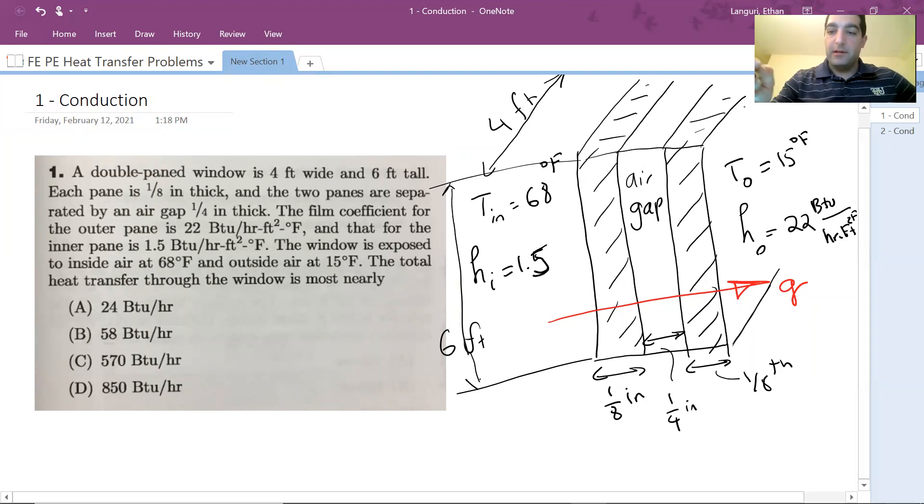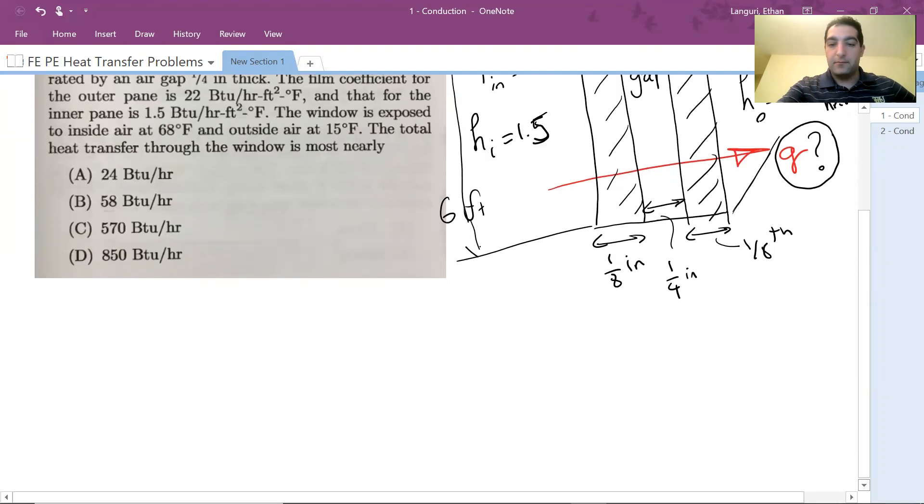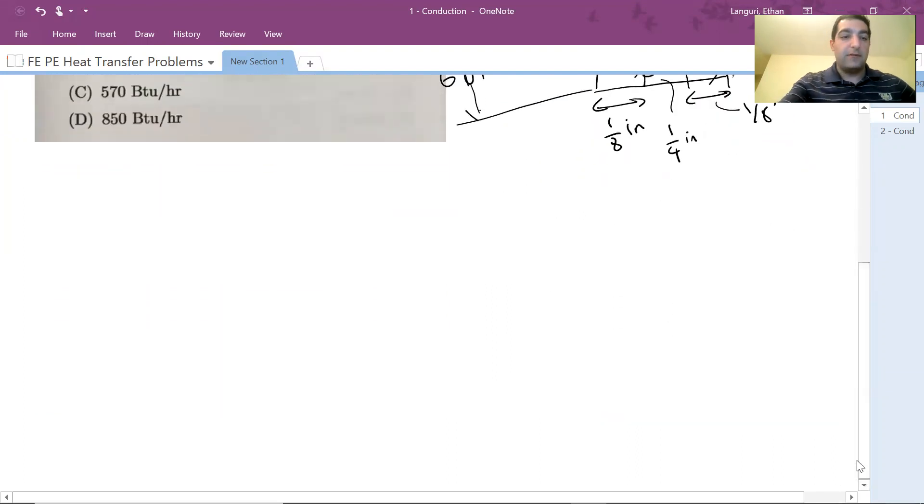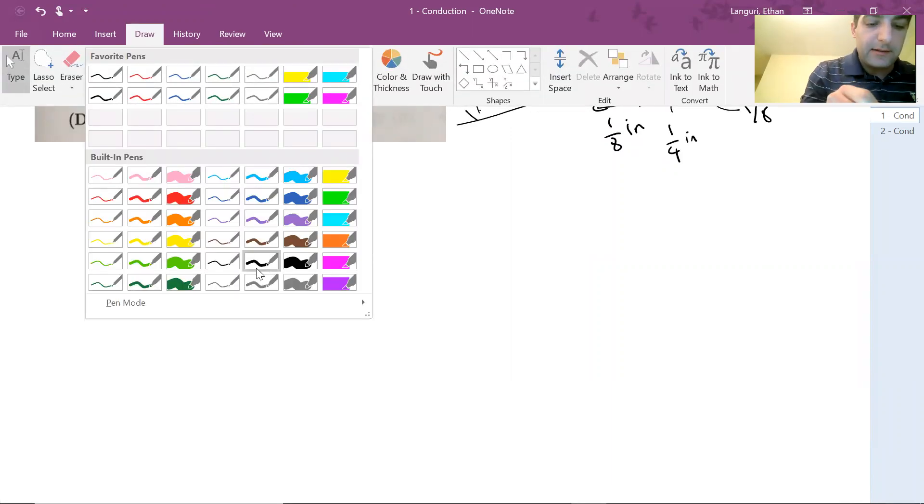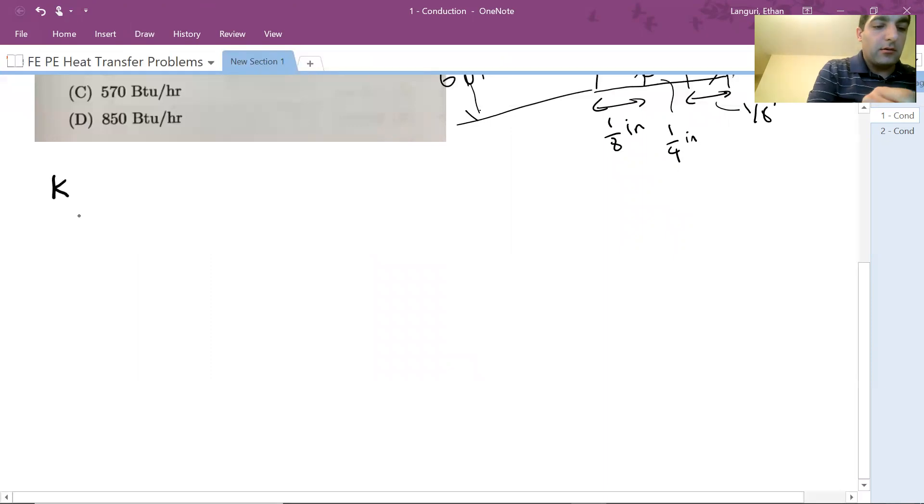So again, I have a double-pane window, and here is the information I have. The question is, what's the amount of heat you're losing through this window? Let's go ahead and solve it. To do this, first of all, we need to find the thermal conductivity of the glass, and we need to know the thermal conductivity of the air.